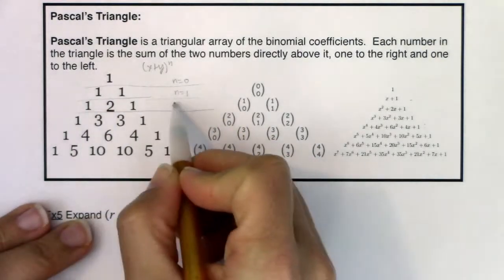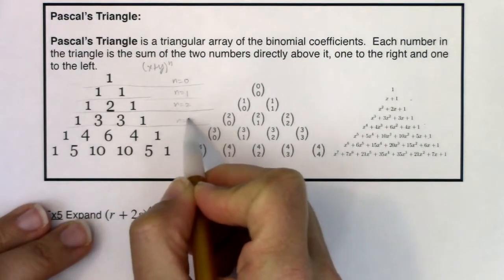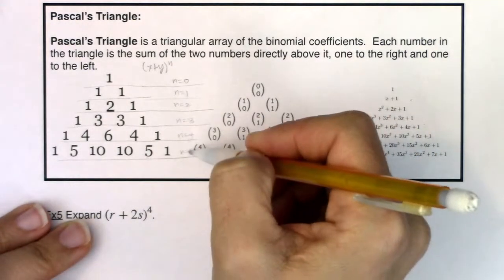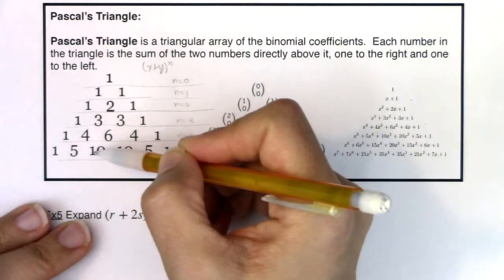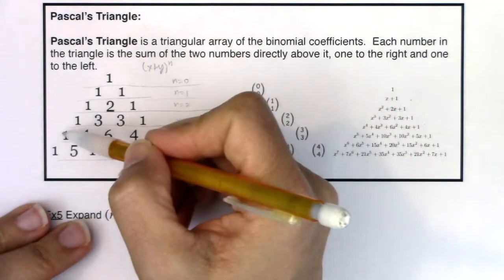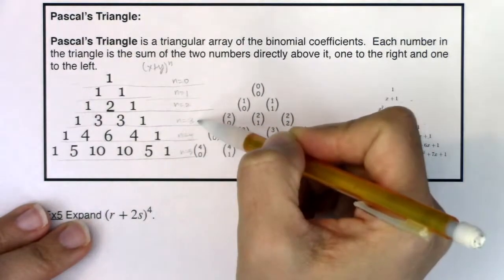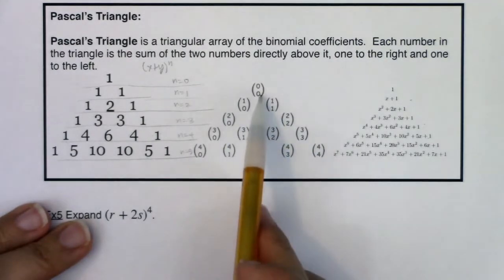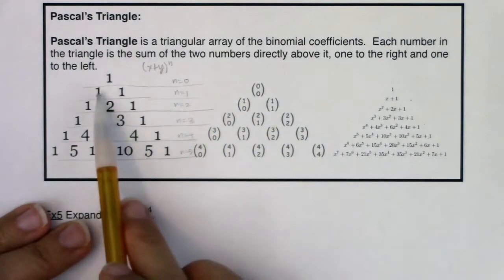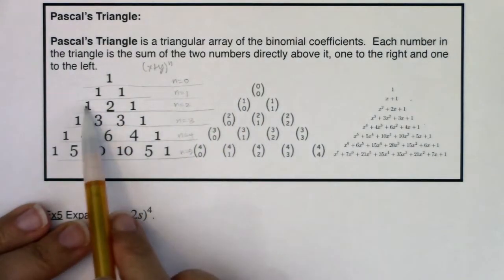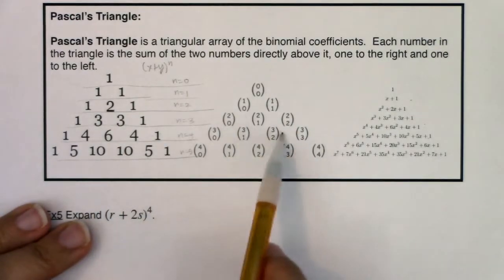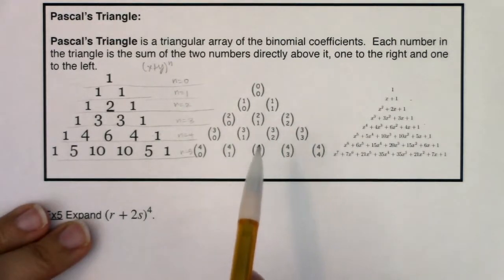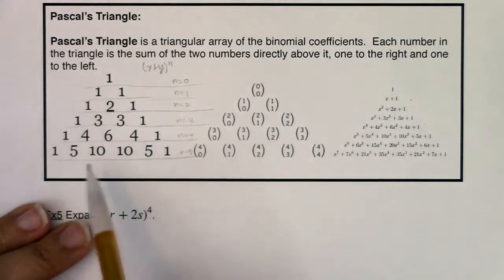When n equals zero, anything raised to the zero is just one. When n equals one, these are the coefficients of your binomial expansion. Then n equals two, three, four, five. So if you had x plus y to the fifth power, the coefficients are one, five, ten, ten, five, one. And each row corresponds to choose notation: two choose zero, two choose one, two choose two — those are the binomial coefficients from the binomial theorem. It's faster to use Pascal's triangle than to calculate each one on a calculator.